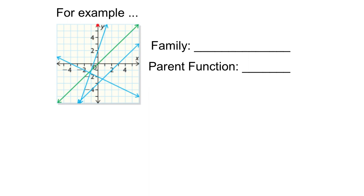For example, here's a graph and I have one, two, three, four different functions on the same graph. Each function has the same family resemblance — they are all straight lines. So the family is linear; these are all linear functions. The simplest function is the one that's in green here. The equation of that function is y equals x, or in function notation, f of x equals x.